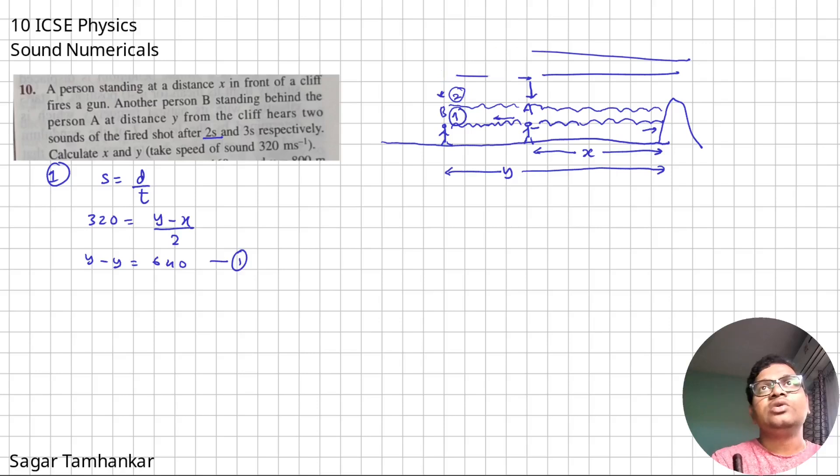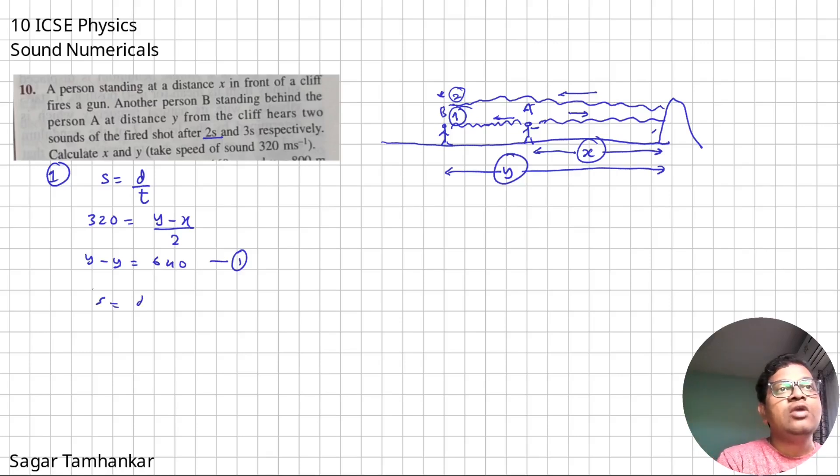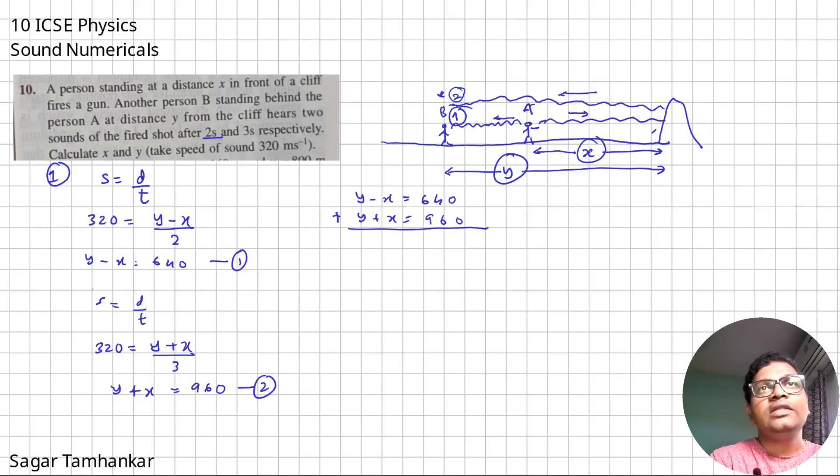Now, in the second case, what is happening? The sound is leaving the gun, the sound has gone here, the sound has reflected and reached B. So that means it has covered a distance x and then it has covered a distance y. So if I have to use speed equals distance upon time, therefore 320 will be y plus x upon the time taken in this case is 3 seconds. So that means y plus x equals 960. As you can see now, there are two equations and therefore they have to be solved simultaneously. So I have y minus x as 640, I have y plus x as 960. When I add these two equations, I get 2y, and this is zero, this is 1600.